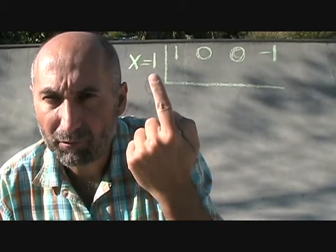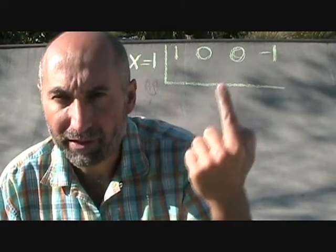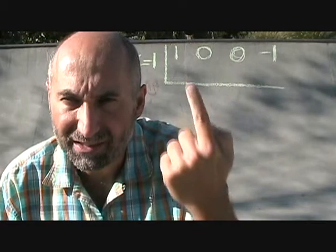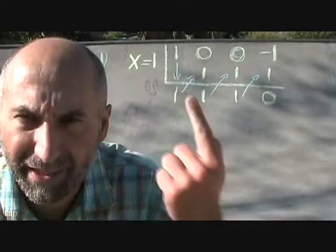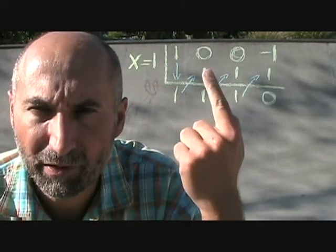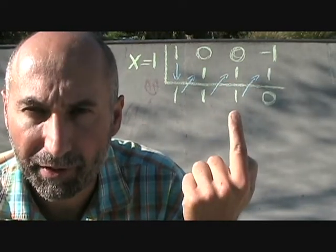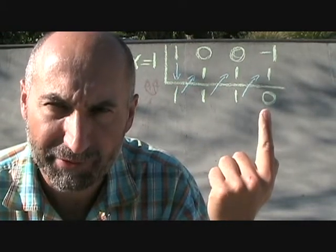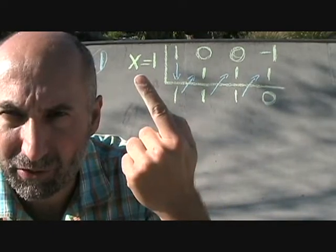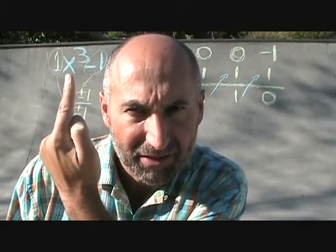Now we go through the synthetic division: bring the 1 down, multiply 1 times 1, get 1, add to get 1, multiply 1 times 1, get 1, add to get 1, multiply 1 times 1, get 1. Then negative 1 plus 1 equals 0. The remainder is 0, so x minus 1 is confirmed as a factor of x cubed minus 1.